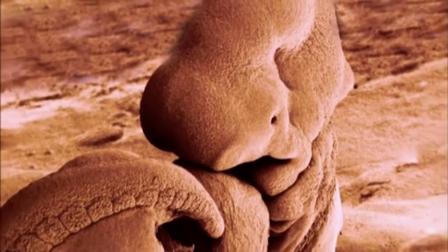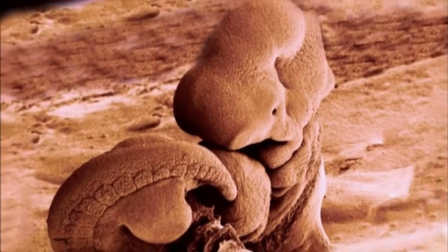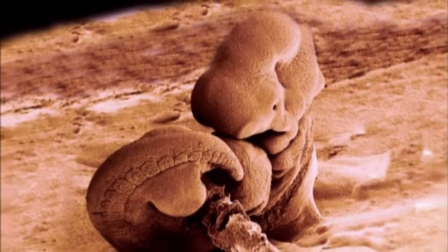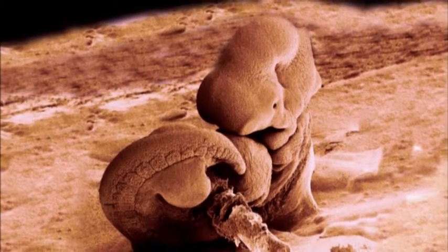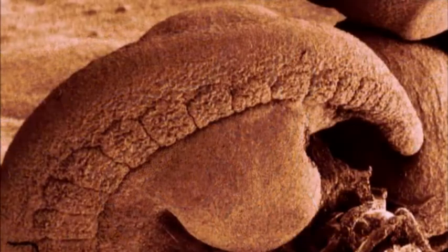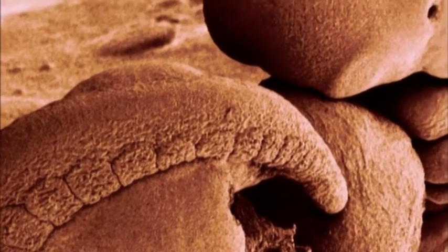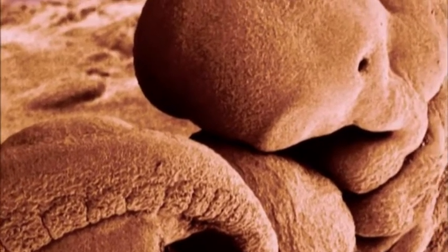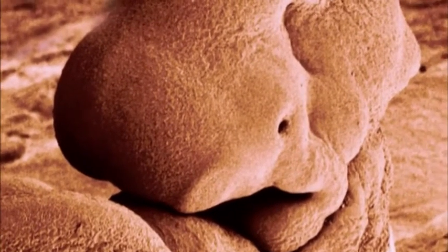This is the embryo four and a half weeks after fertilization. It is only about a fifth of an inch long. The primitive backbone now curls into a tail, which will disappear in a few weeks. A large brain is developing, and on the side of the head, an eye.